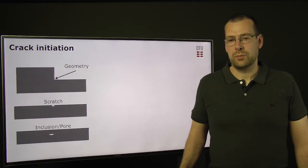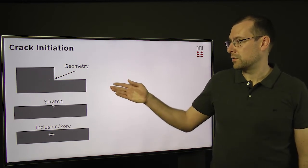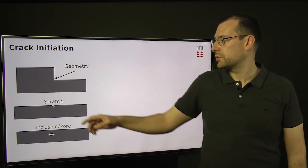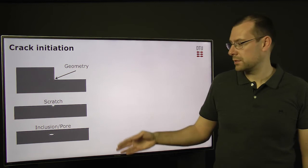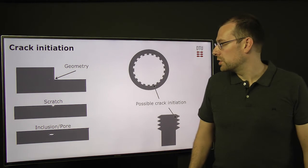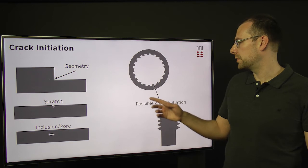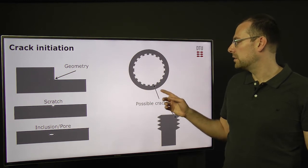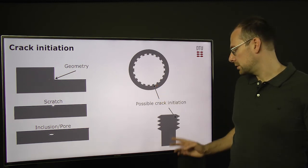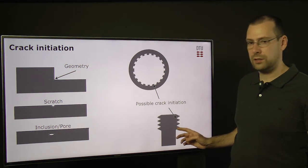So when a component is exposed to cyclic stresses, then we will initiate a crack or may initiate a crack. And this will typically happen at an unfortunate geometry or at a defect such as inclusions or a scratch in the surface. Wind turbine components have many unfortunate geometries. And here are two examples where we have a gear, where we have an unfortunate geometry between the gear teeth. And here is also a bolt where the inside of the thread is quite unfortunate.